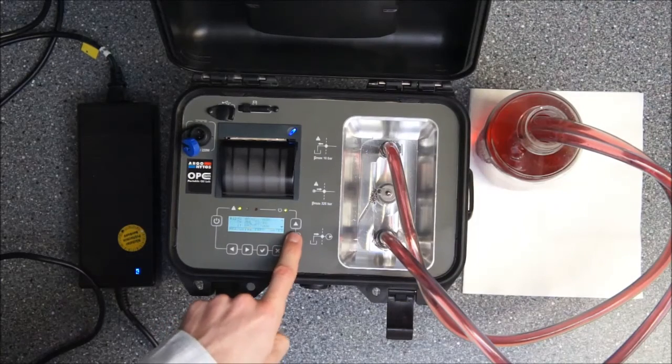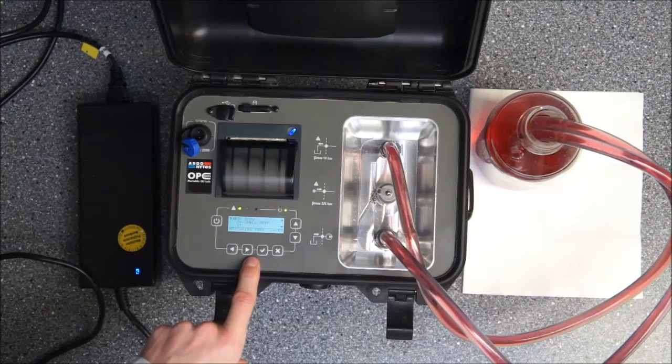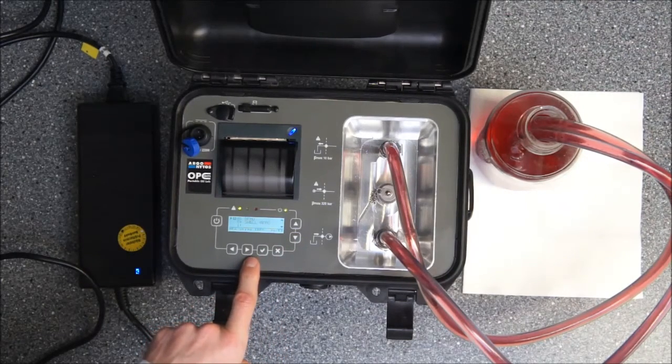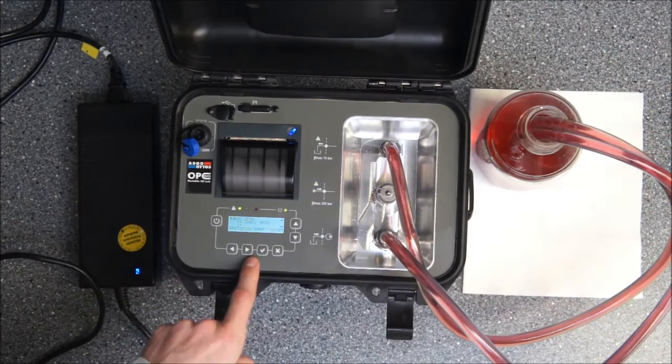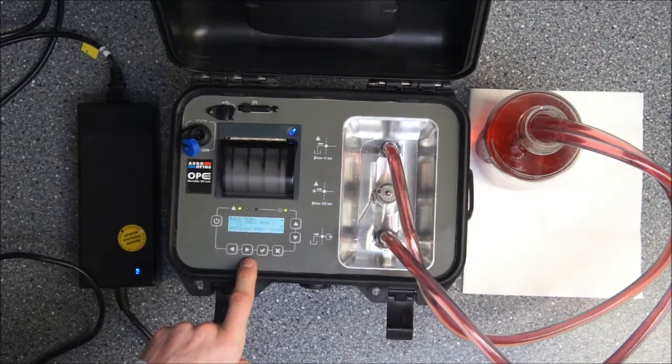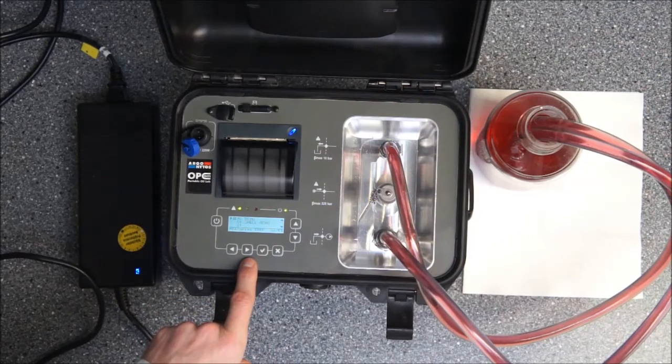So what can we do here? We can put in several measurement information according to the measurement point that we are currently at. In our case I just choose demo mode or demo measurement, and also you see the second point that's the oil we are measuring. It's the Shell Aerofluid.